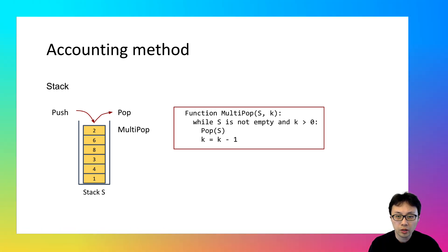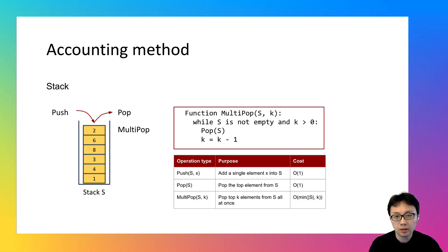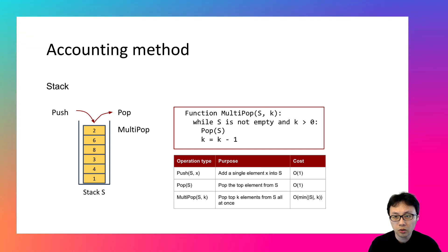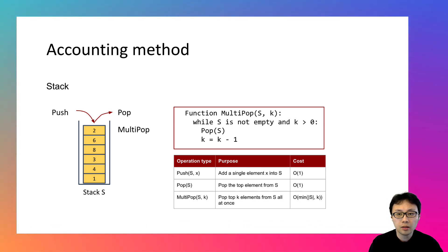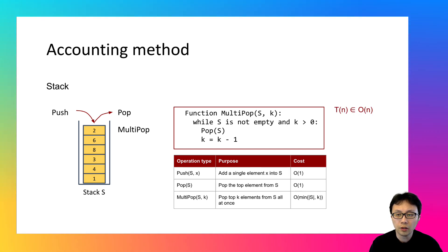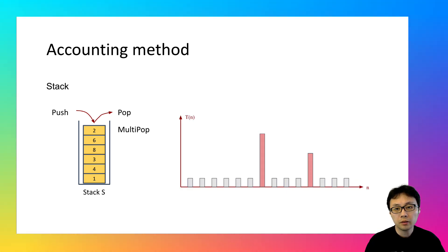The summary of the three stack operations is presented in this table. The cost of both push and pop operations is O(1). The cost of multipop is either the length of the stack or k, whichever is smaller. Based on this, the worst-case time complexity of stack operations is O(n), where n represents the number of elements in a stack. However, the worst case may not accurately represent the time complexity of a sequence of stack operations.